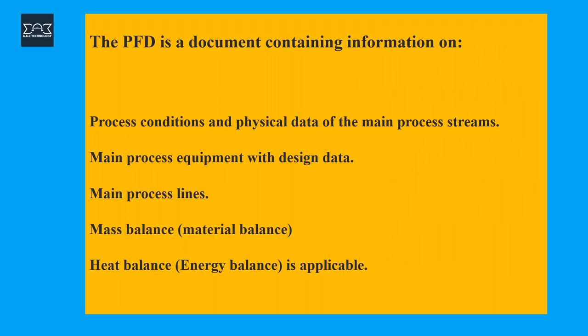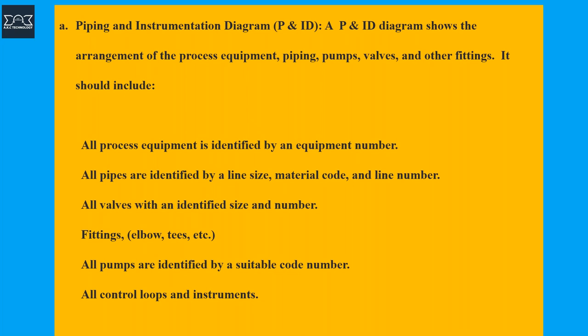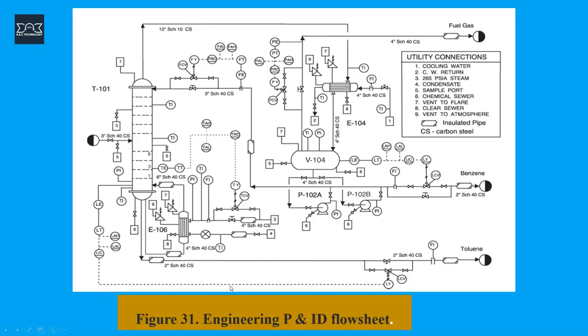The P&ID relates to the process conditions and heat balance. There's a P&ID of a distillation unit with the kero stripper, the debutanizer, the vacuum, and the waste heat. What we have in the P&ID is the equipment, the line sizing, the fittings, the pumps — these are the various things in the P&ID we need to take into consideration, such as tag numbers, duties if they are heat exchangers, and so on. This is a typical P&ID diagram involving the various controls, relief valves, and indicators.